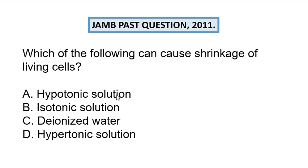It means the cell is more concentrated than the surrounding solution. So according to the rule of osmosis, water is going to be absorbed by the cell, leading to an increase in size. If there is too much absorption of water, the cell membrane will be unable to hold it and the cell will burst. So hypotonic solution leads to bursting, not shrinkage.